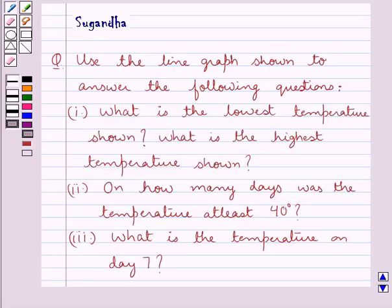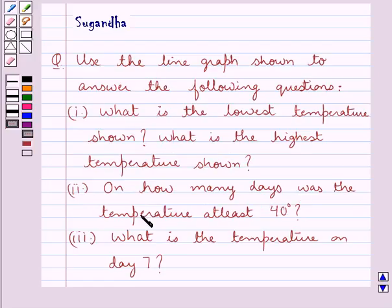The first question is: what is the lowest temperature shown, and what is the highest temperature shown? The second question is: on how many days was the temperature at least 40 degrees? The third question says: what is the temperature on day 7?